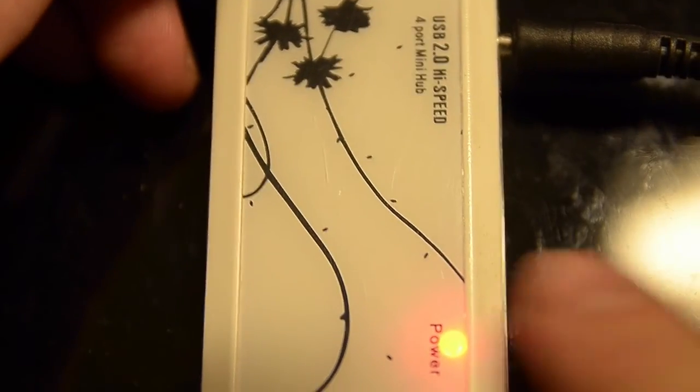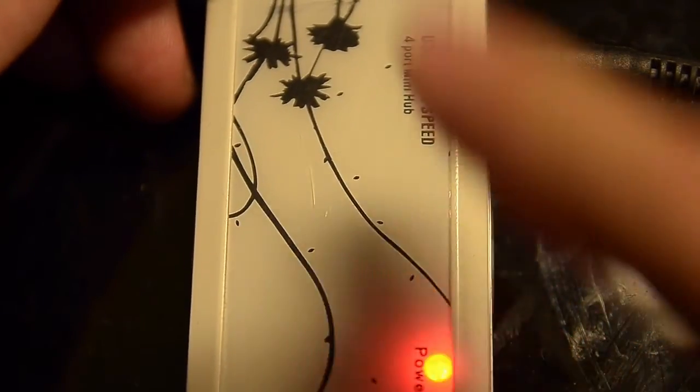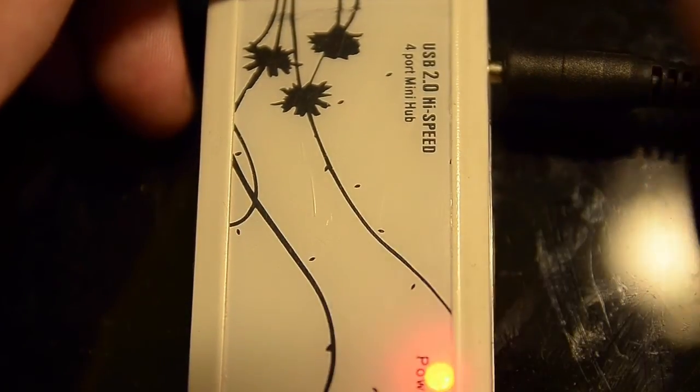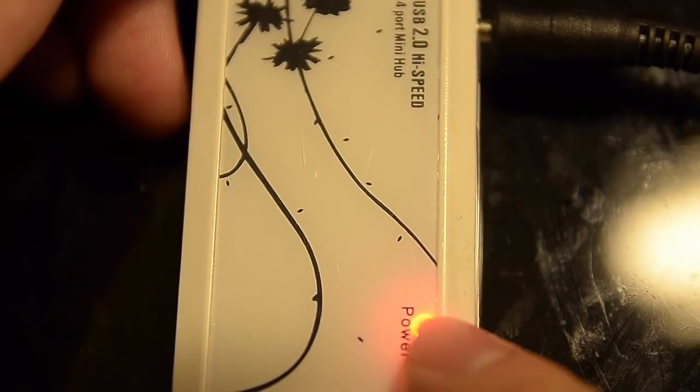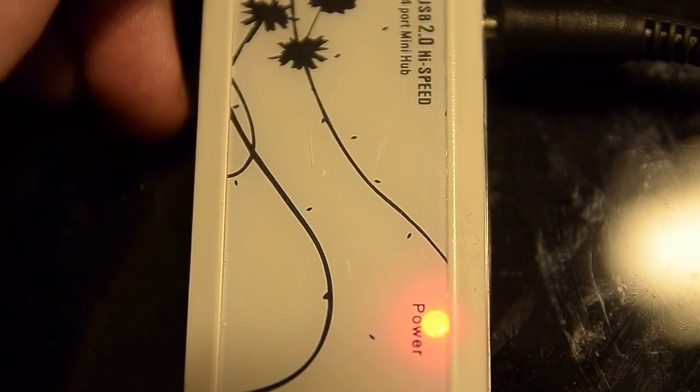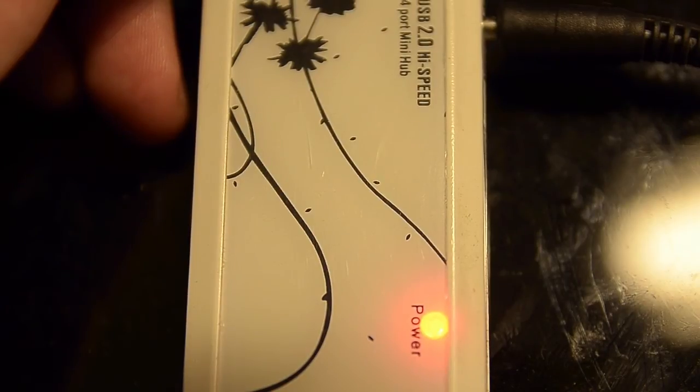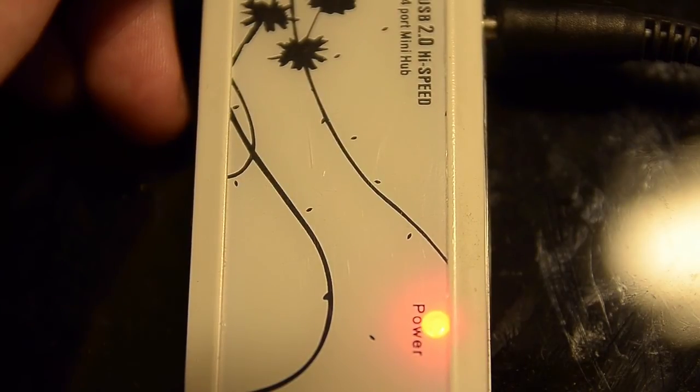As you can see here, the light is powered up. I just plugged it into the wall. Sorry, I have to put it vertically like that because the wire is not long enough. You can see the power here. I should show you me plugging it into a phone to show you how it works.